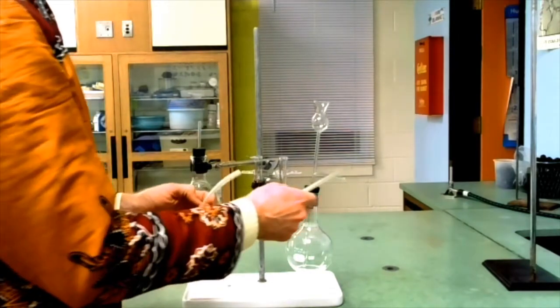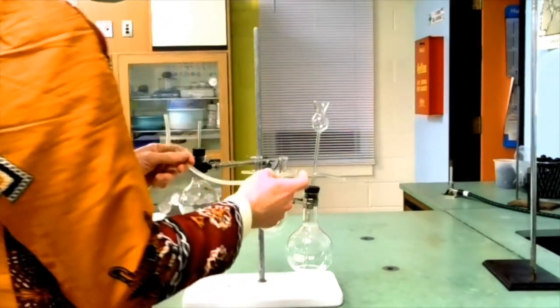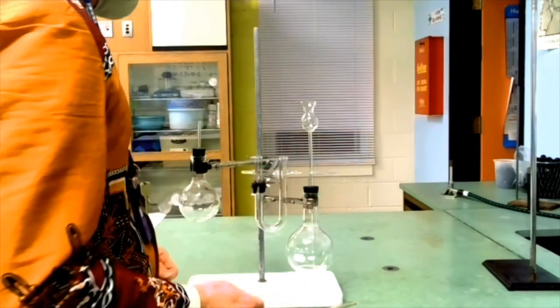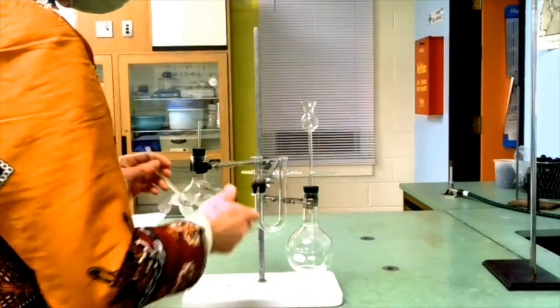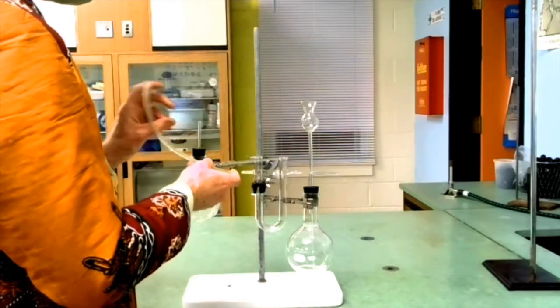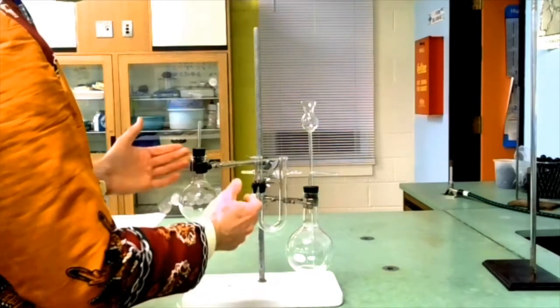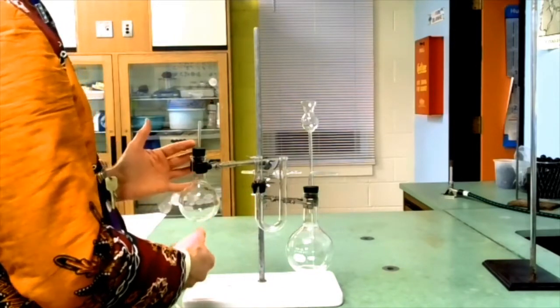Then I'm going to connect the tubing from the output from the gas generator tube to the input to the drying tube. And then the output from the drying tube to the input to the gas collection flask.